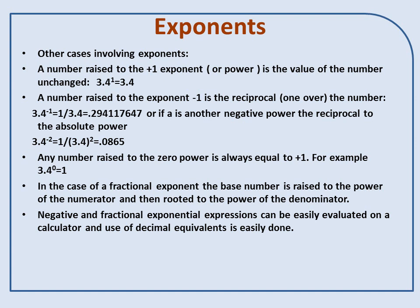The number raised to the plus 1 exponent is the value of the number unchanged. 3.4 to the 1 power is 3.4. A number raised to the exponent minus 1 is the reciprocal 1 over the number. 3.4 to the minus 1 is 1 divided by 3.4, which turns out to be .294117647.